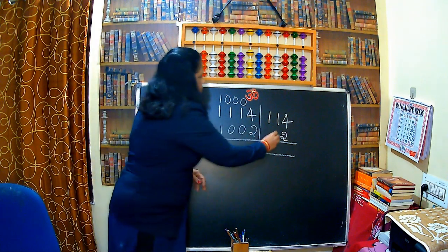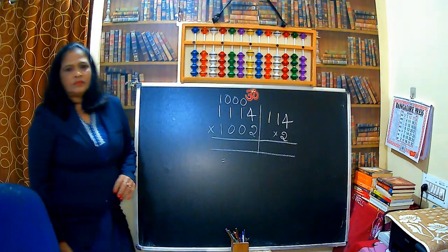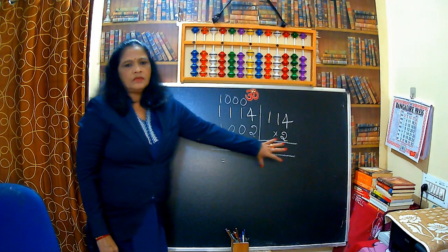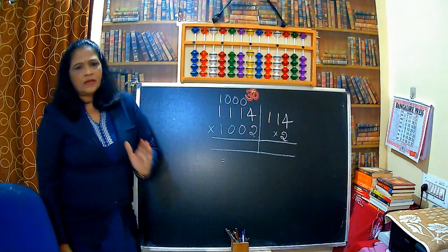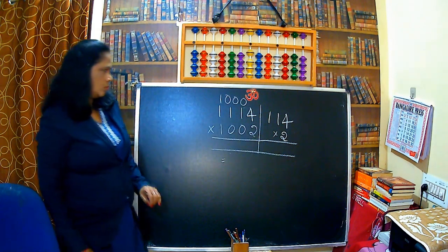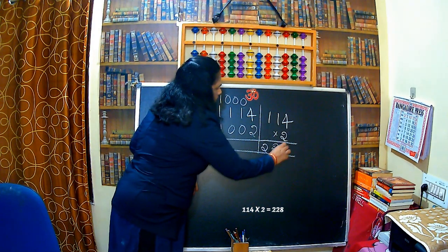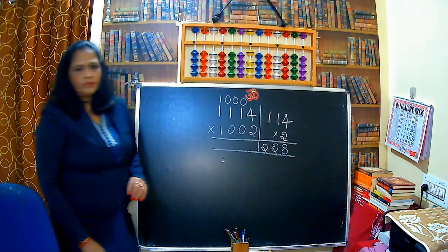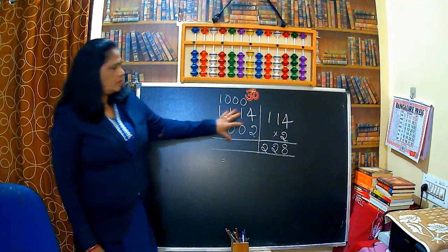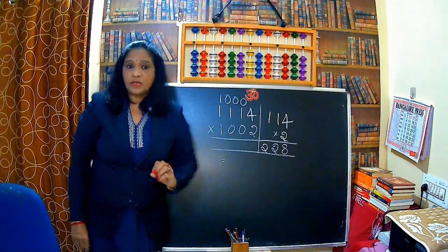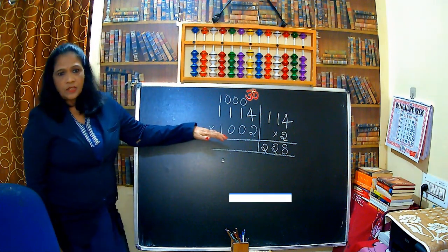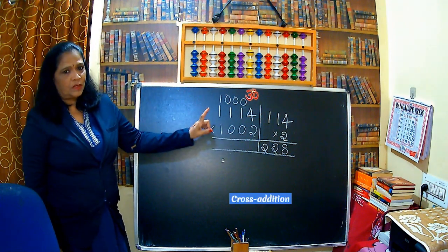Multiply these two in the right hand side. 114 into 2 is 228. That is in the right hand side. What is the method we are using to write the number in the left hand side? Cross addition. Addition, not multiplication.